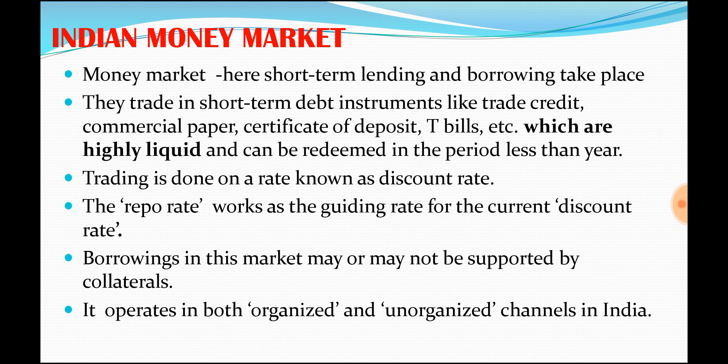The trading here is done at a rate known as discount rate. For example, take the case of the central government — the central government wants to raise money, so it issues a treasury bill. This treasury bill is bought by a bank. The bank has surplus cash and wants to invest in something while the government wants money, so it is issuing a treasury bill. They meet at the money market.